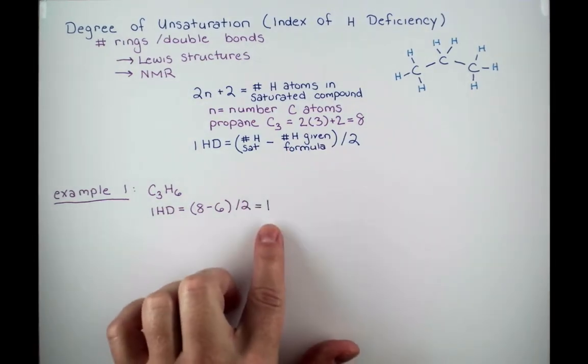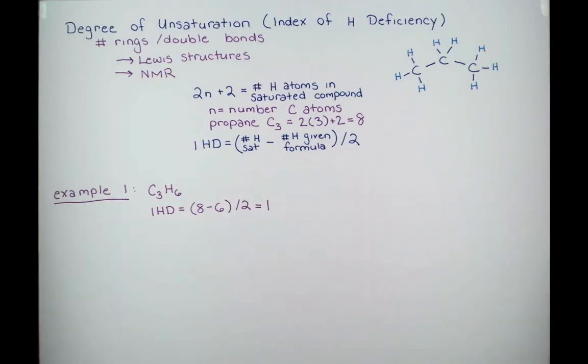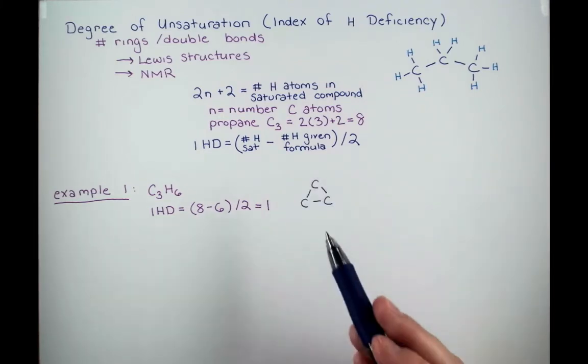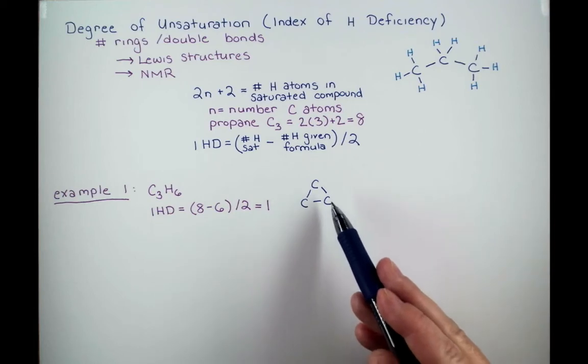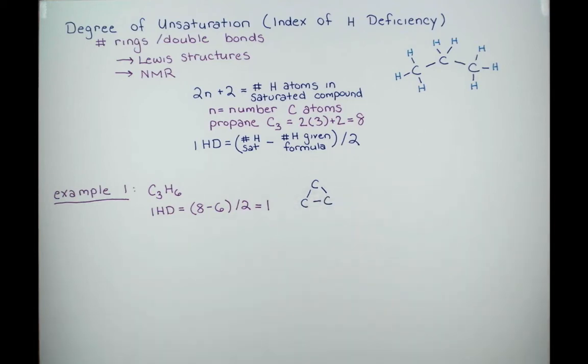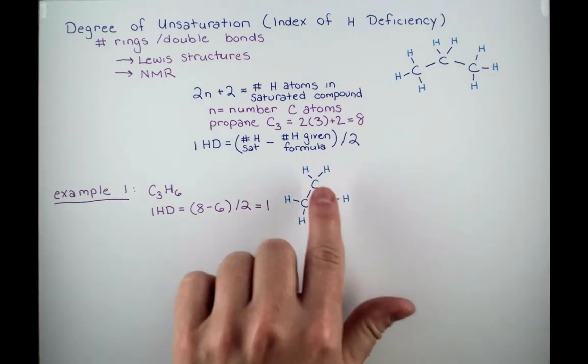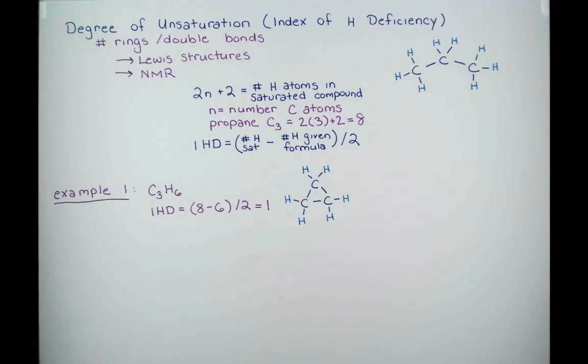So now we know we have one double bond or one ring in our formula. Now we can make a hypothesis about our structure. Let's first start by introducing a ring. In our ring structure, each carbon starts off by having 2 bonds. So we need to add 2 more bonds onto each carbon to give the 4 bonds that carbon likes to have when neutral. If we add on our H atoms, we can see we have 2, 4, 6 hydrogen atoms, and that agrees with our formula.